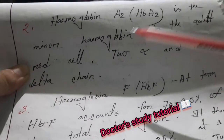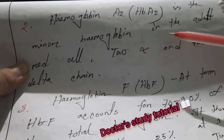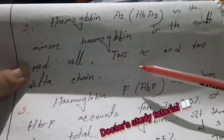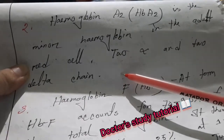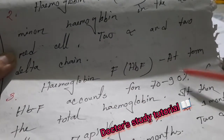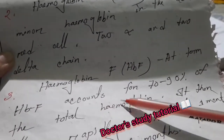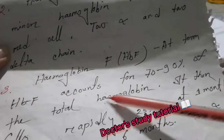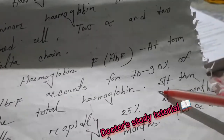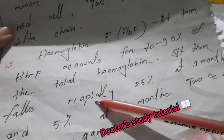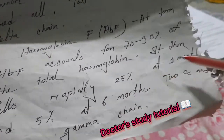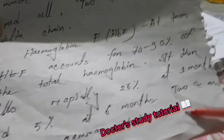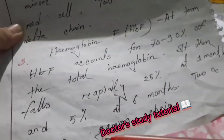Hemoglobin A2 is a minor hemoglobin in the adult red cell. Hemoglobin F accounts for 70 to 90% of total hemoglobin at birth, then falls rapidly — to about 25% at one month and 5% at six months — and consists of two alpha and two gamma chains.